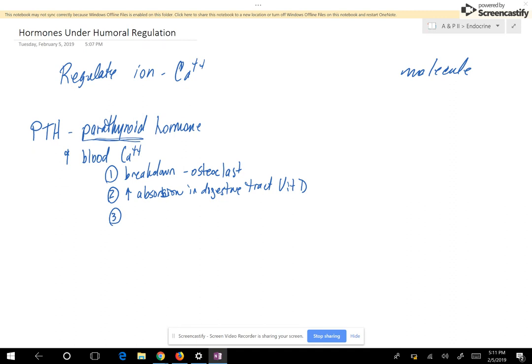Number three is the kidneys. The kidneys are told to reabsorb calcium. Reabsorbing something keeps it in the body. Secreting calcium would put it in the urine. So the kidneys are told to not put calcium in the urine. So the calcium stays in the body and it goes into the bloodstream.